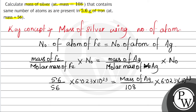By solving this equation, we get the mass of silver equal to 10.8 grams. So by setting the number of atoms of iron equal to the number of atoms of silver, and using this formula, we find the mass of silver is 10.8 grams. I hope you have understood.